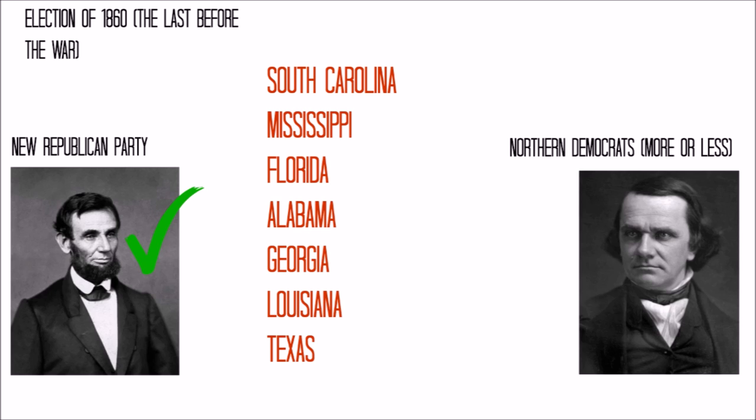Mississippi: 'Our position is thoroughly identified with the institution of slavery, the greatest material interest of the world. Its labor supplies the product which constitutes, by far, the largest and most important portions of commerce on earth.' South Carolina: 'We affirm that these ends for which the government was instituted have been defeated, and the government itself has been made destructive of them by the action of the non-slaveholding states. Those states have assumed the right of deciding upon the propriety of our domestic institutions, and have denied the rights of property established in fifteen of the states and recognized by the Constitution. They have denounced as sinful the institution of slavery.'